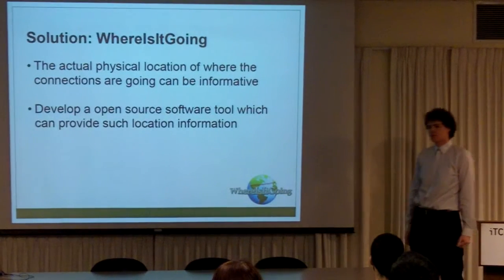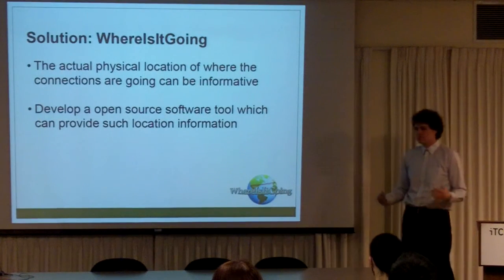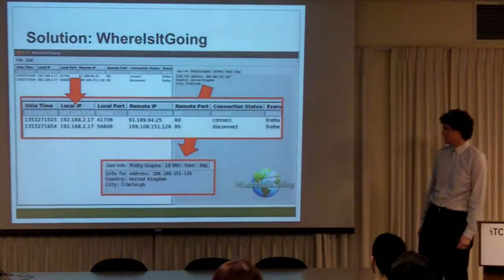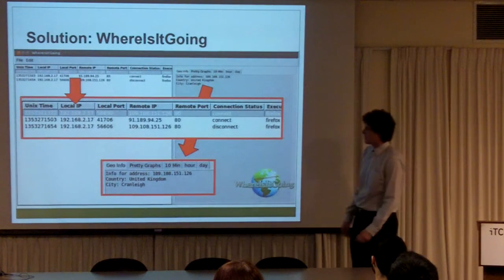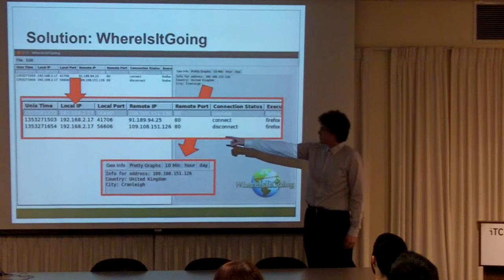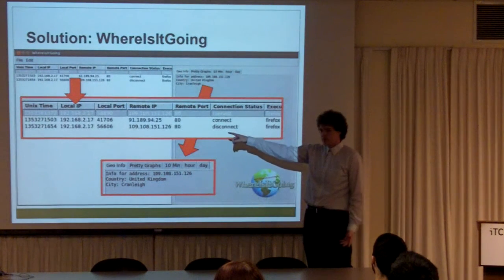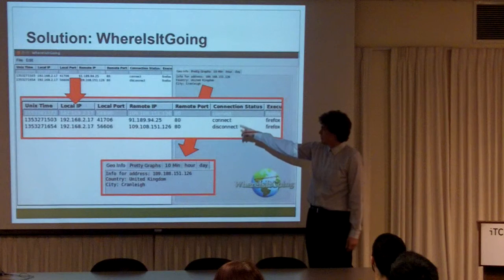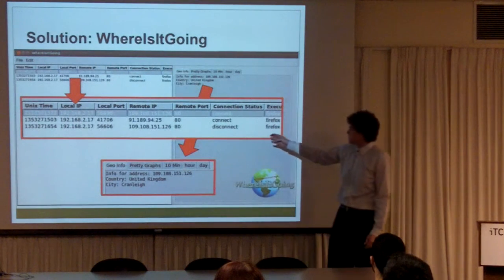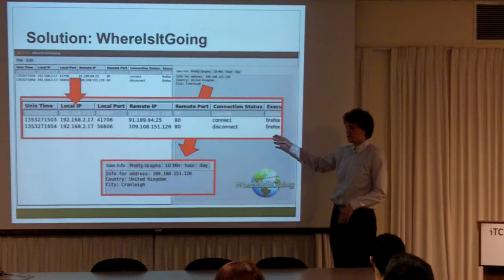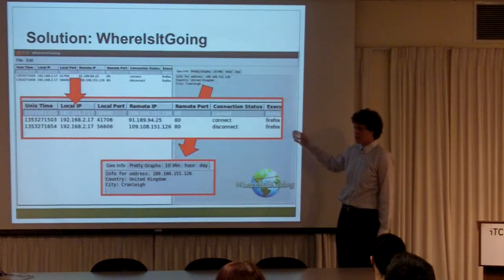With that in mind, we set out to develop an open source application that would provide that information to the user. Our solution is "Where Is It Going?" It takes information such as the timestamp, the local IP and local port — which is the computer that you're on — the remote IP and remote port — which is the computer that you're connecting to — the connection status, whether you're connecting or disconnecting, and the executable that's responsible for the connection.